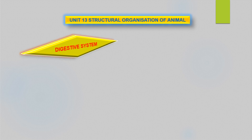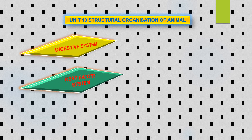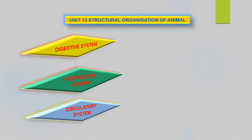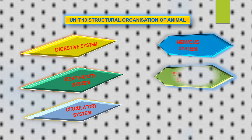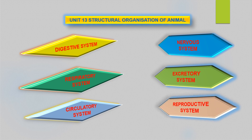The systems we will cover are: first, digestive system; second, respiratory system; circulatory system; nervous system; excretory system; and reproductive system. We will go one by one in detail. We are going to see all the systems one by one.